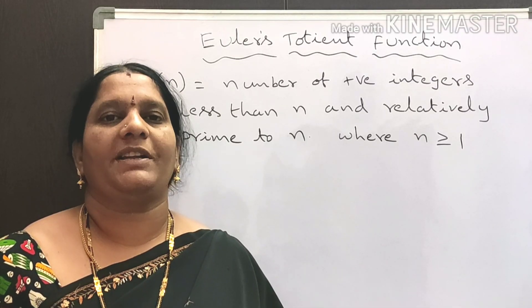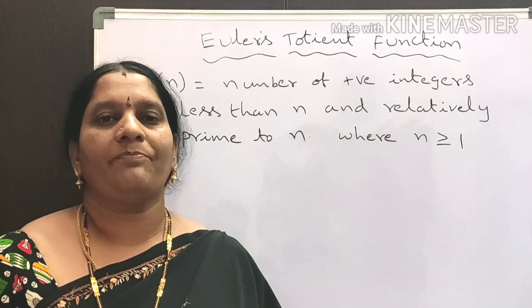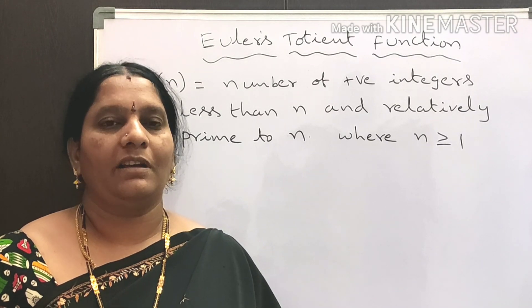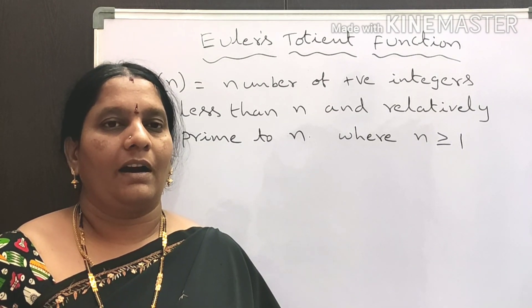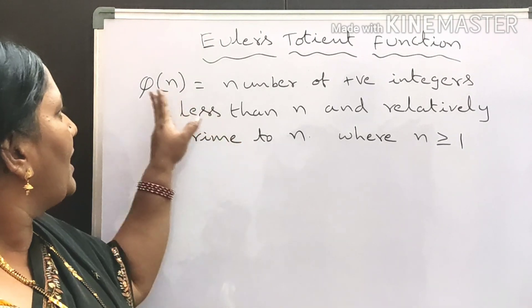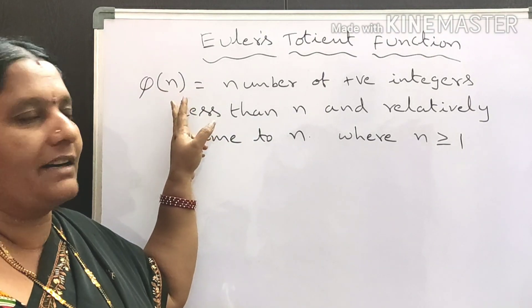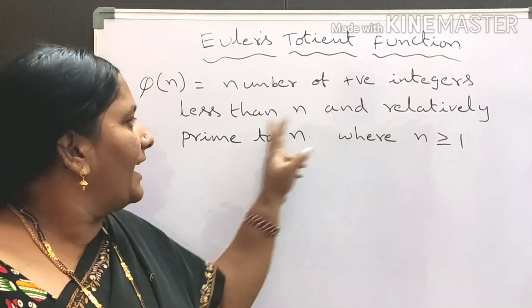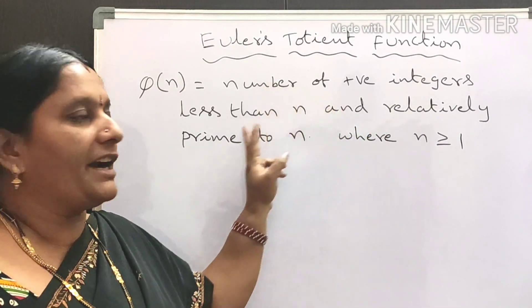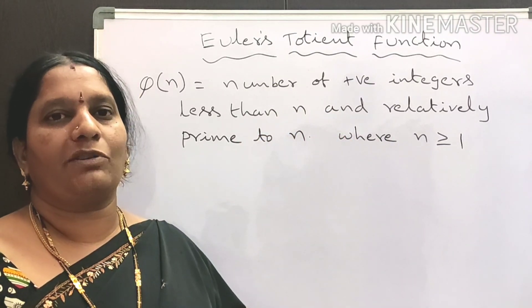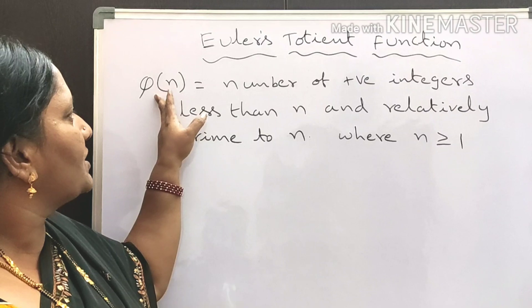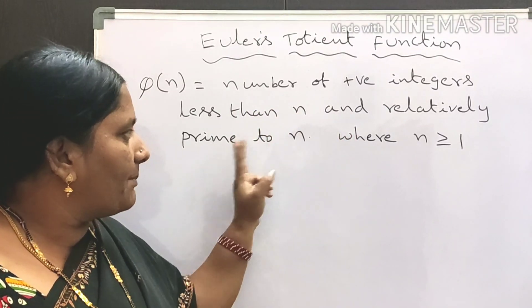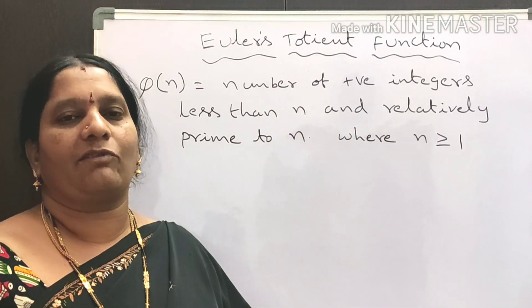Welcome back to another session of Mathematics Made Easy. Today our topic is number system — the Euler-Totient function. The definition is: phi of n is the number of positive integers less than n and relatively prime to n, where n is greater than or equal to 1.